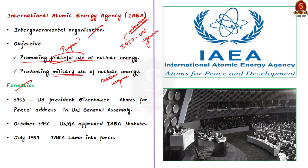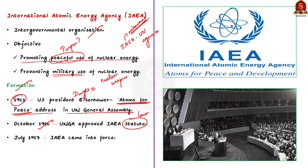Regarding its formation, in the year 1953 the then US president Dwight D. Eisenhower proposed the creation of an IAEA organization in his address to the UN General Assembly named 'Atoms for Peace.' After this address the statute for the IAEA was approved in October 1956 and came into force in July 1957, when the organization came into being. Even though it is autonomous it has to report to both the UN General Assembly and the UN Security Council.